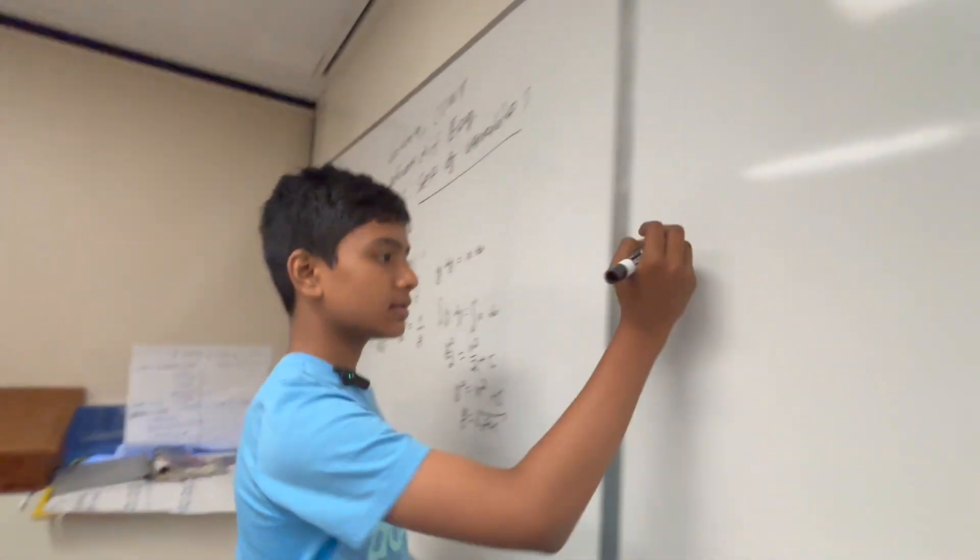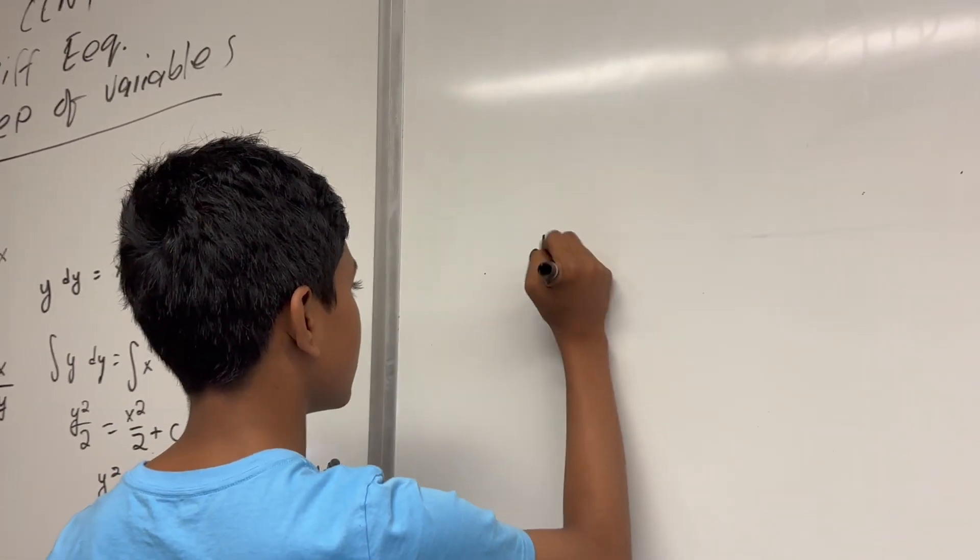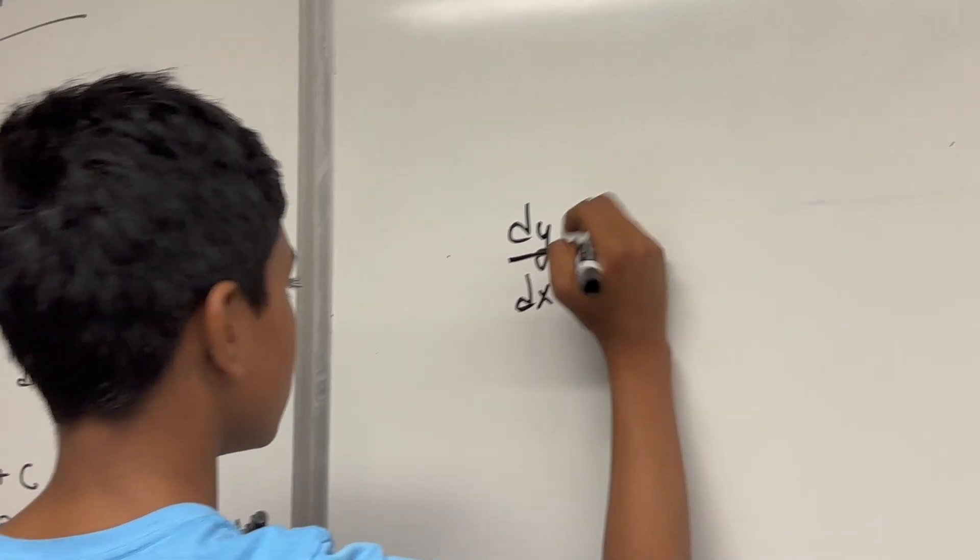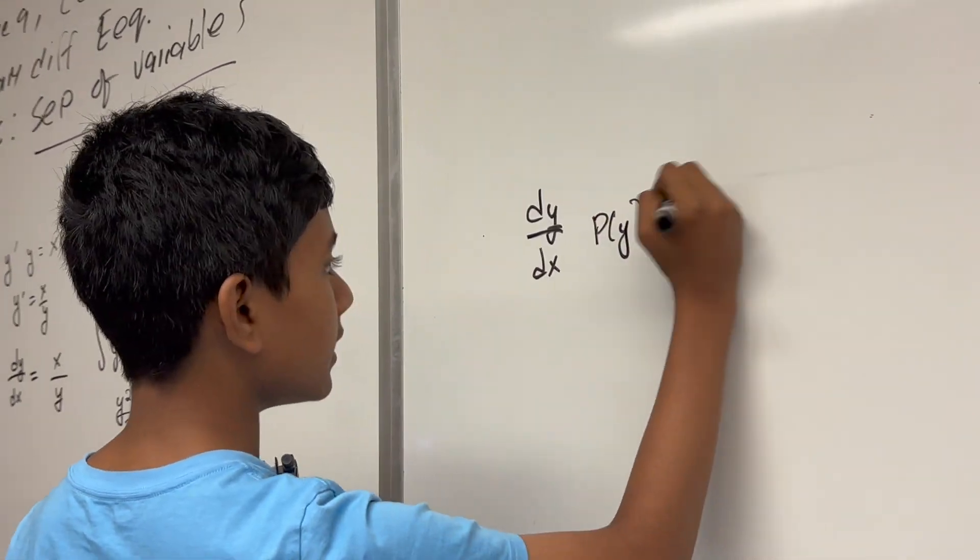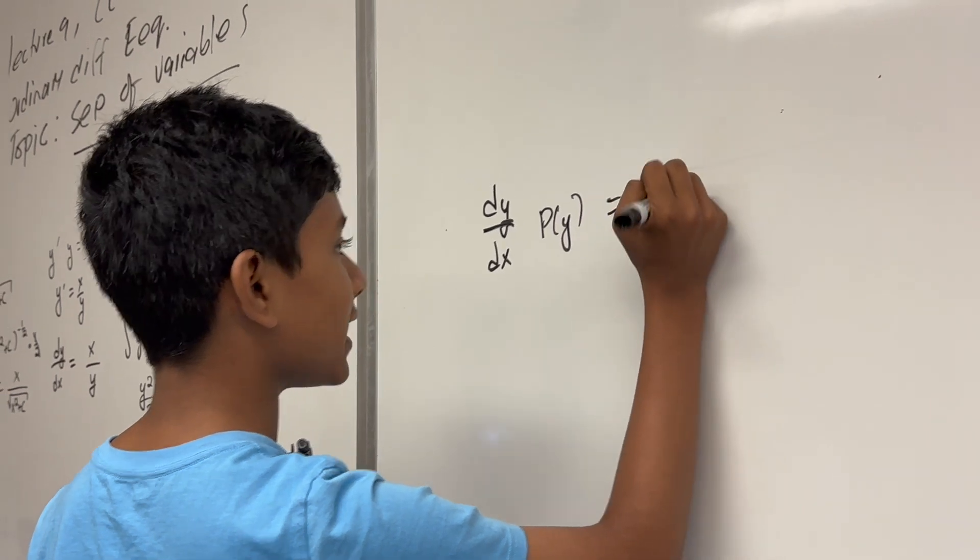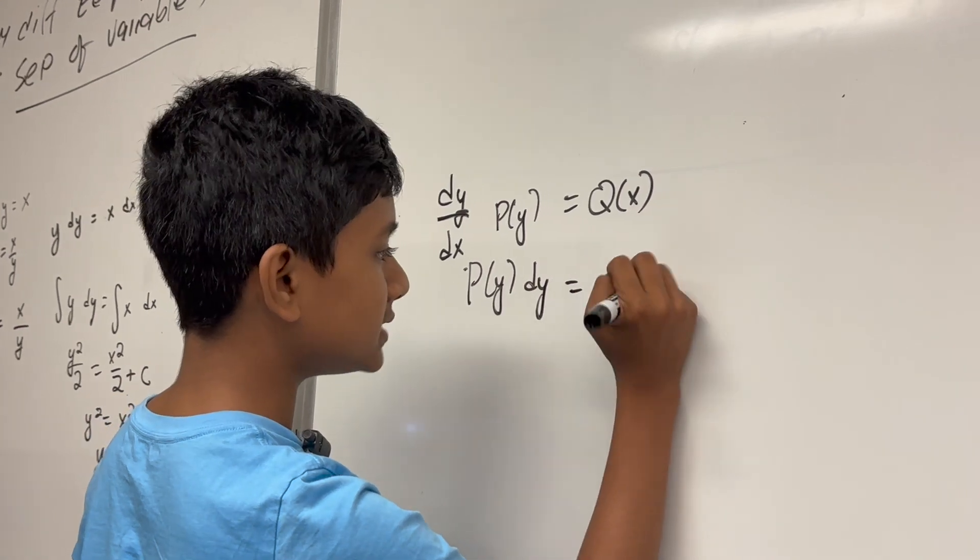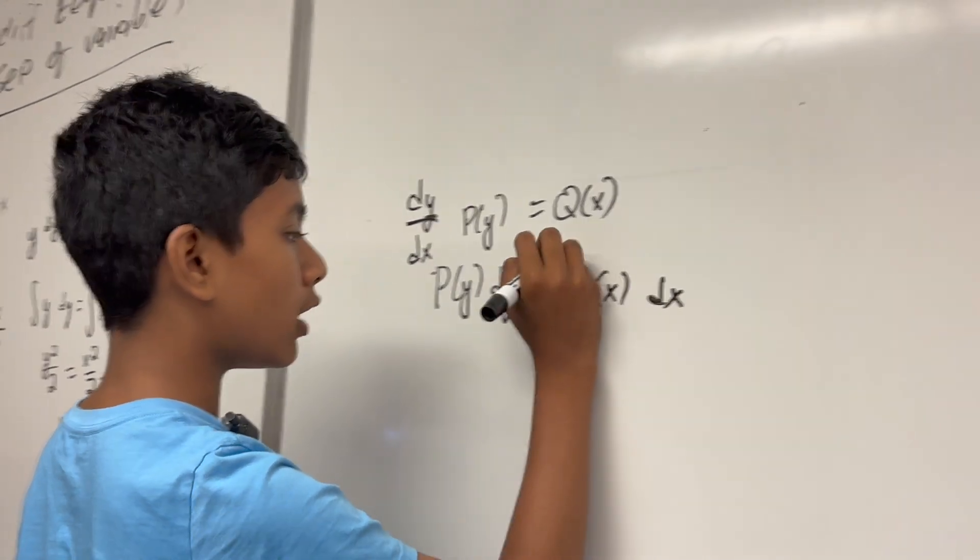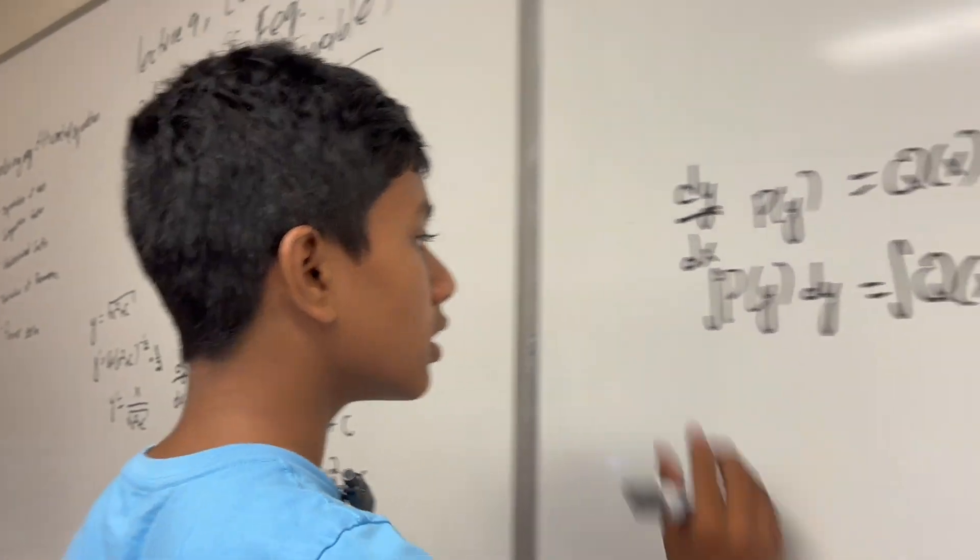So that's the essence of separation of variables. All you want to do is take dy dx. You've got some function of y, and then you've got some function of x. All you want to do is get p(y) dy equal to q(x) dx, and then integrate on both sides. Now obviously, why doesn't this always work?